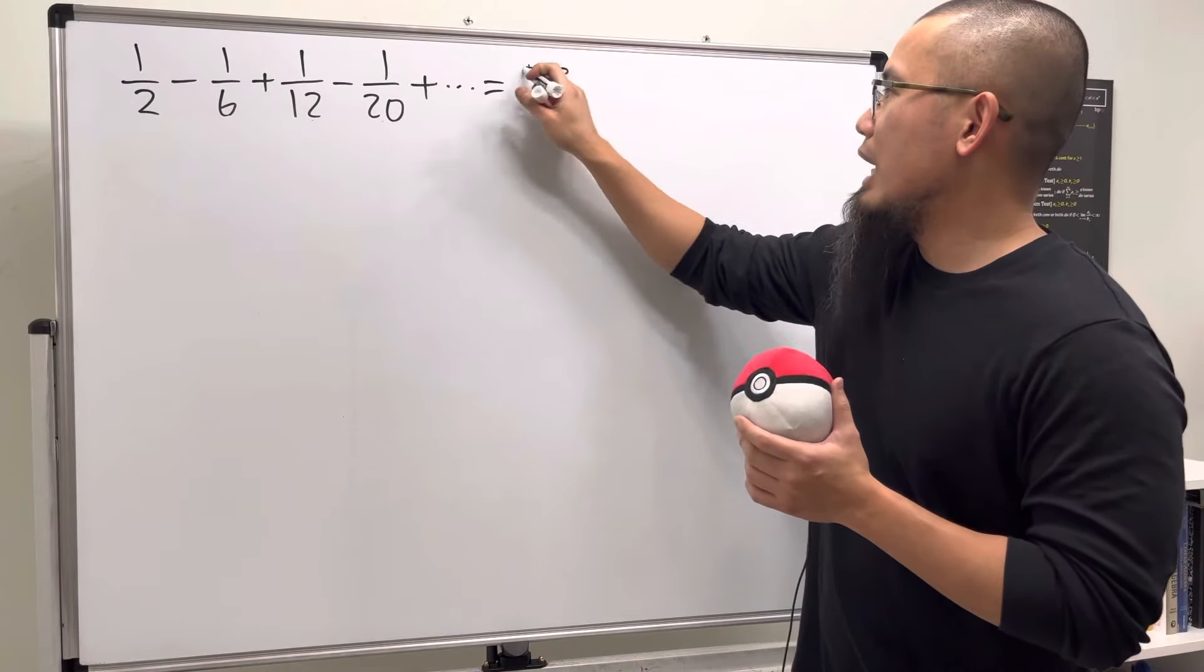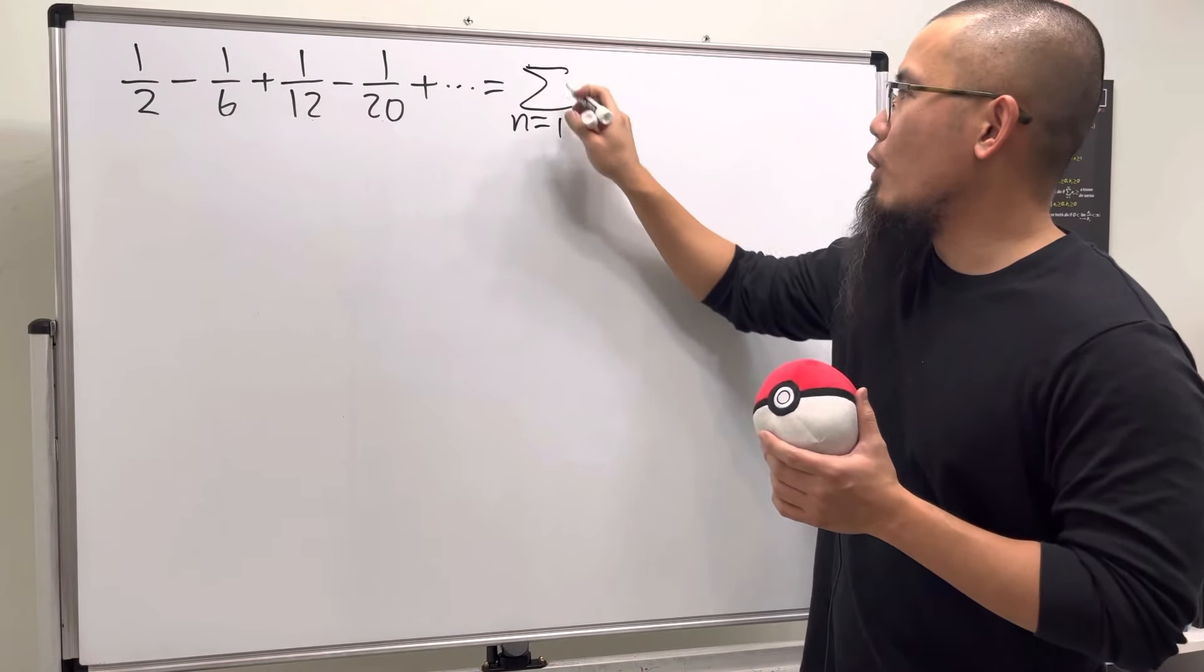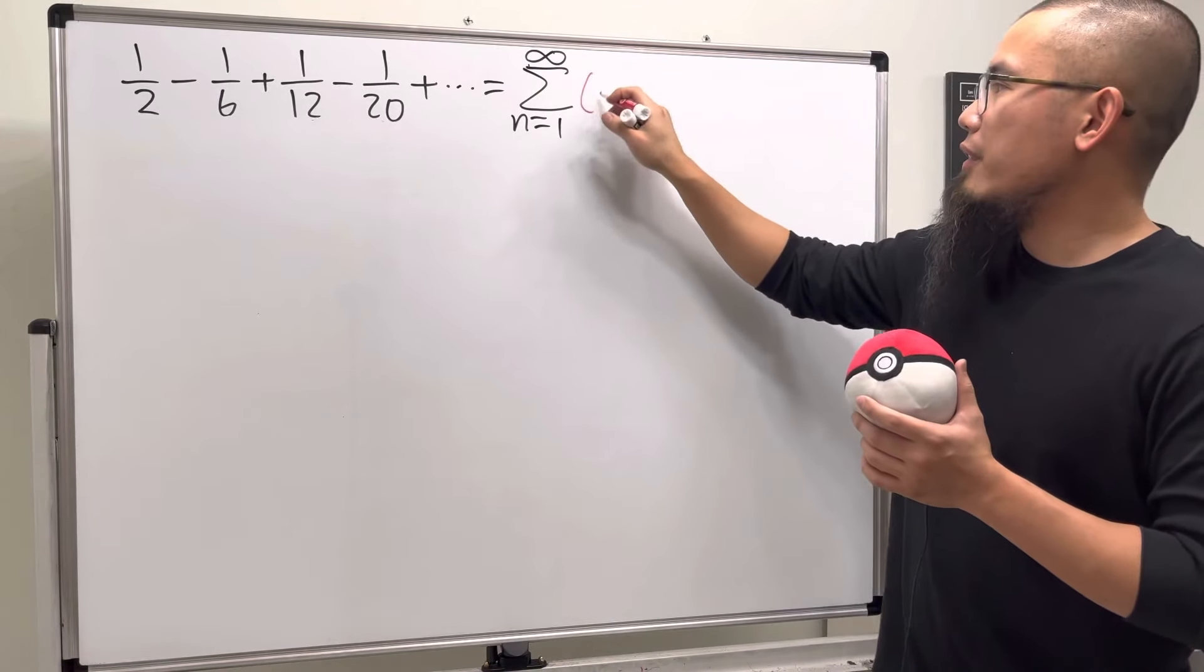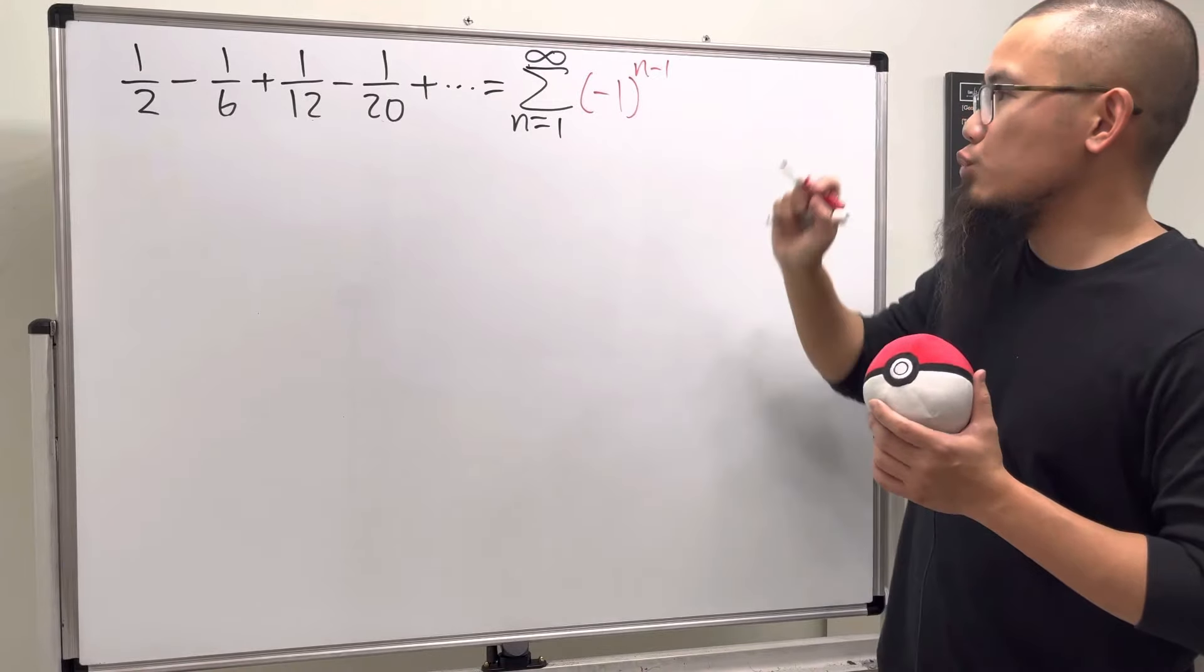Let's go ahead and do that. Here we have the series as n goes from 1 to infinity, and because it starts with a positive term, let's use the factor (-1)^(n-1).